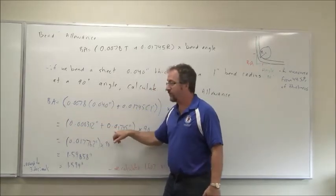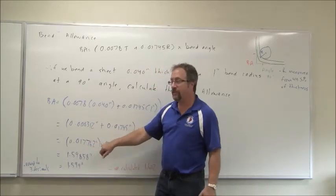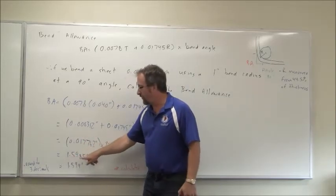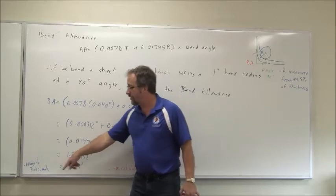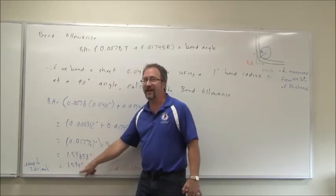Add those two together, 0.017762 inches. Take that number, multiply it by 90. I get 1.59858. Round it to three decimals. That 5 makes the 8 into a 9, so it's 1.599 inches.